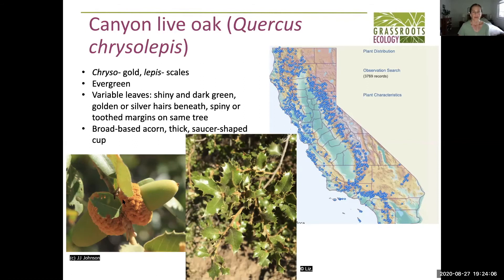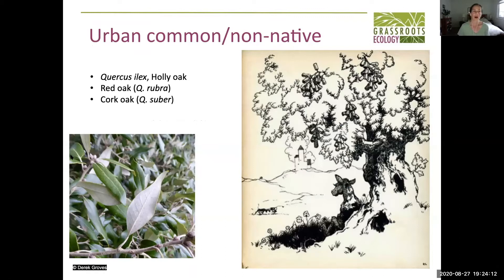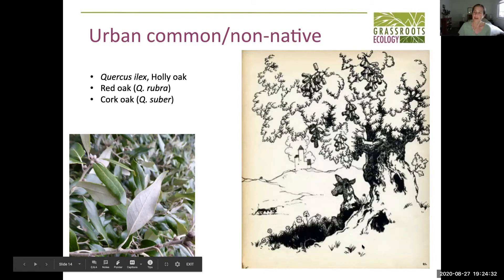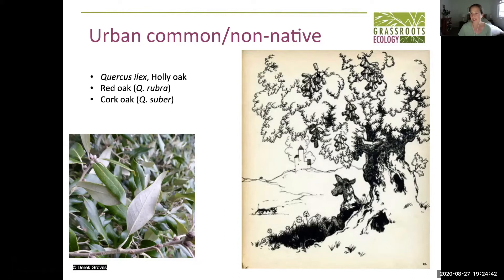There are lots of other oaks in the urban environment. The holly oak is the most common urban oak planted that's not native — it's well-behaved, doesn't tend to buckle concrete, and grows straight up, which is why people plant it. And there's also the cork oak, which Ferdinand the bull sits under. Cork oaks are pretty common in the urban environment — they have acorns like any other oak, not actual corks.